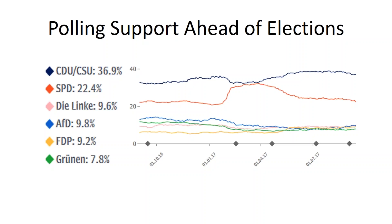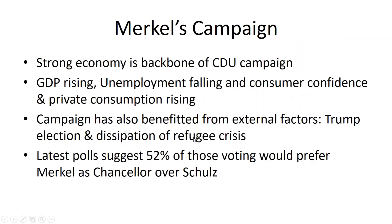Because these two parties are widely expected to take first and second place, much more focus this year is being placed on third place, as this party will take seats in the Bundestag and form the main opposition to the government. Currently, the two parties fighting it out for third place are the far left party Die Linke and the far right party AFD. With the CDU widely expected to take control of government, it's important to highlight what is making Angela Merkel's campaign so successful. The backbone of her campaign has been the strong German economy.